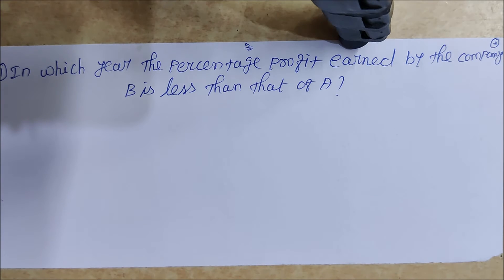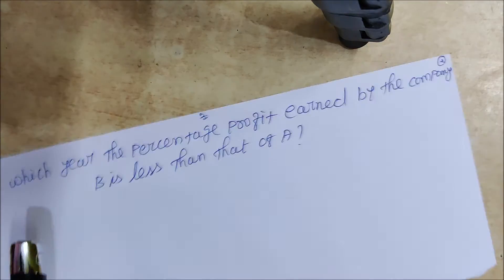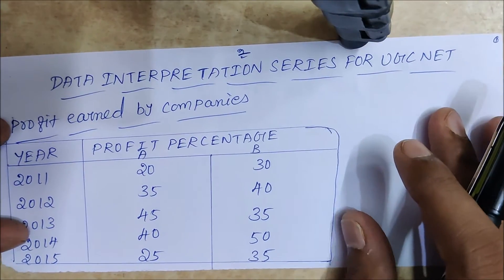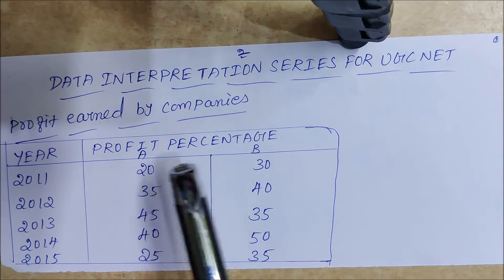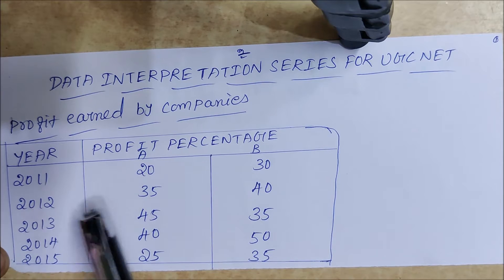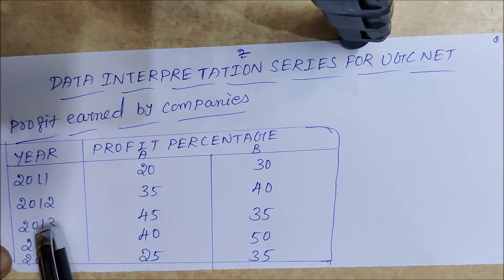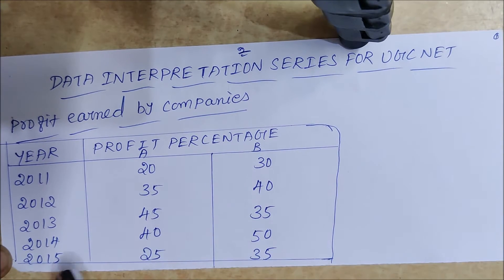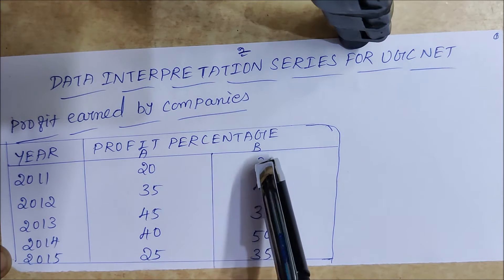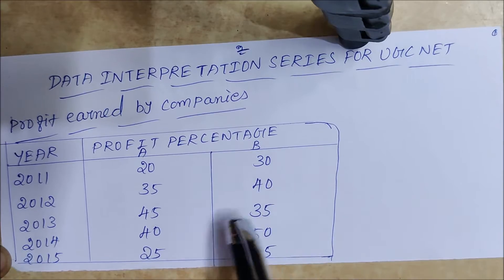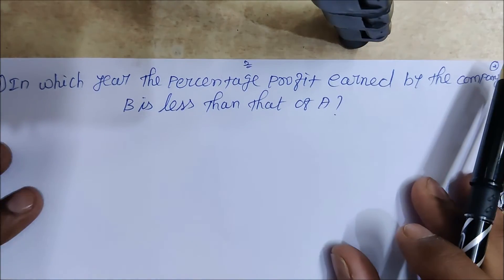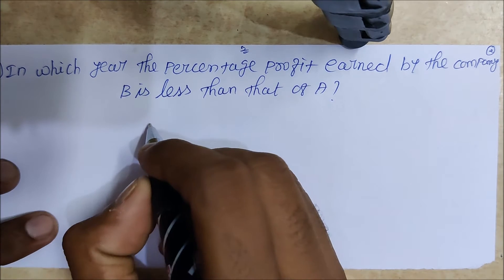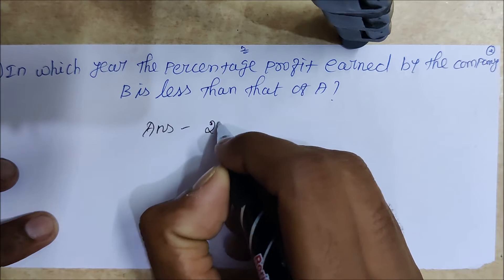We can answer this by observation from the visualizations. In 2011, A is 20% and B is 30%, so B is not less. In 2012, A is 35% and B is 40%, so B is not less. In 2013, A is 45% and B is 35%, so B is less than A — definitely 2013. In 2014 and 2015, B is also not less. So the answer is 2013. No more calculations needed.